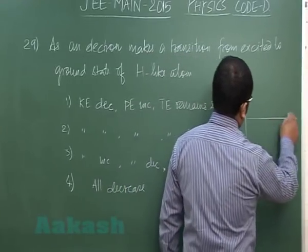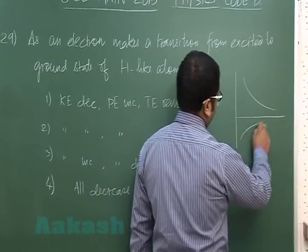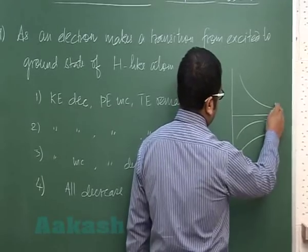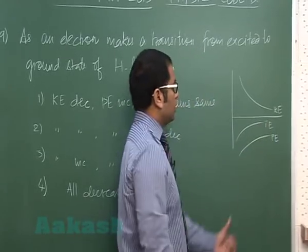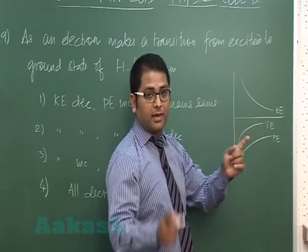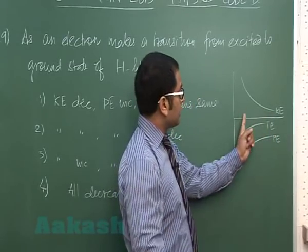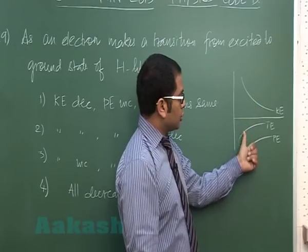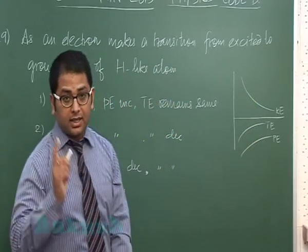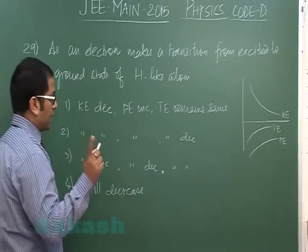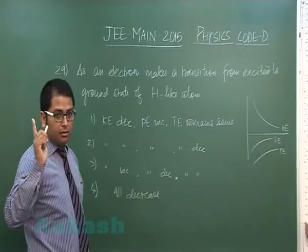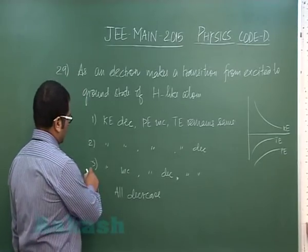If you remember the graph, the kinetic energy, total energy, and potential energy follow specific trends. Since we are going from excited to ground state, kinetic energy increases, while total energy and potential energy would decrease — because for energy we consider the negative sign. So kinetic energy increases and total energy and potential energy decrease.